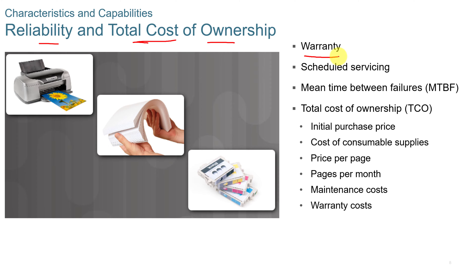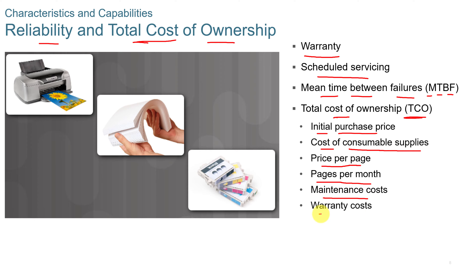You need to look at the warranty offered by the manufacturer, the schedule of service — how often you have to have it serviced — the mean time between failures, or MTBF. For total cost of ownership, consider the initial purchase price, the cost of consumable supplies, the price per page, pages per month you're going to print, maintenance cost, and warranty cost. Inkjet printers are usually very low cost on initial purchase, but manufacturers do that on purpose because the consumable supplies — the ink cartridges — have a high cost, and that's where they make their money back.